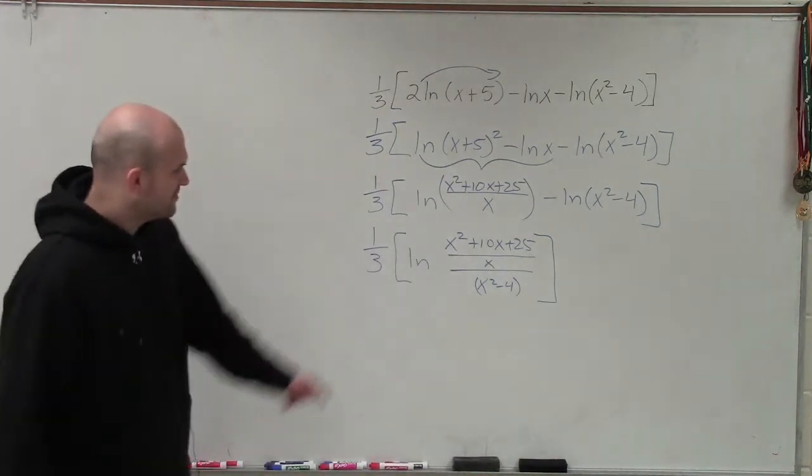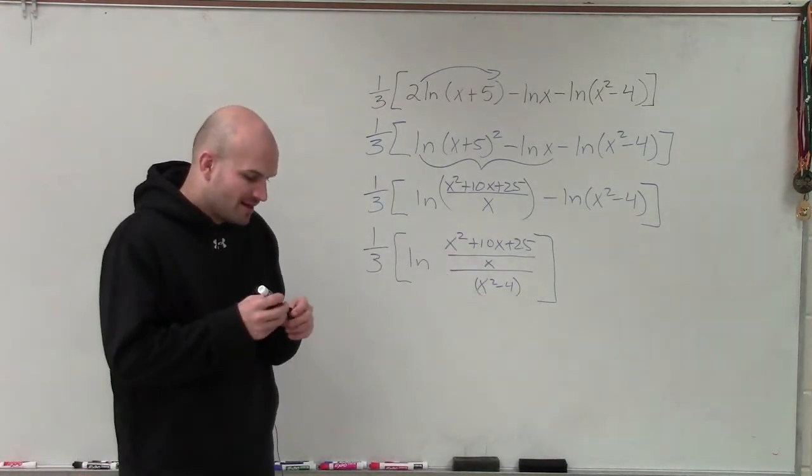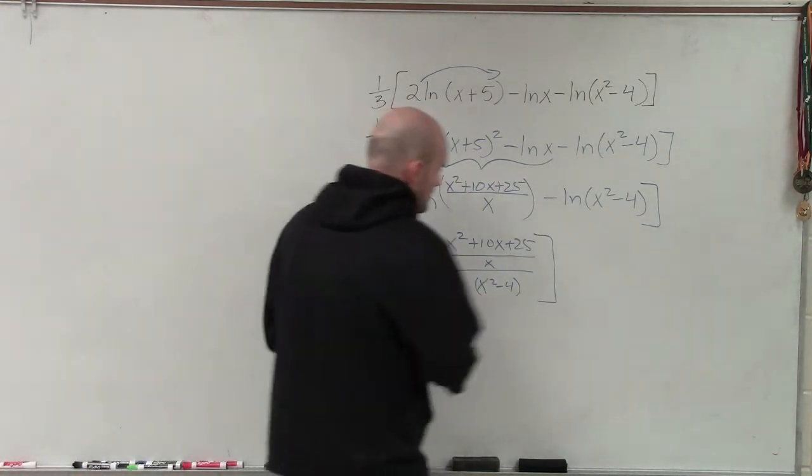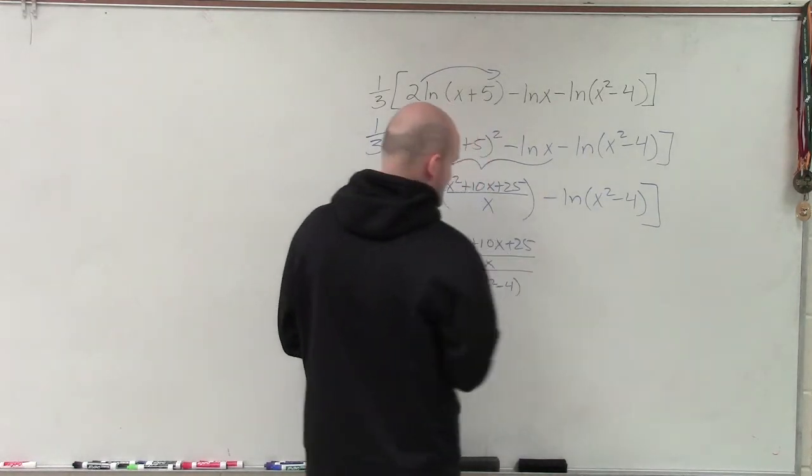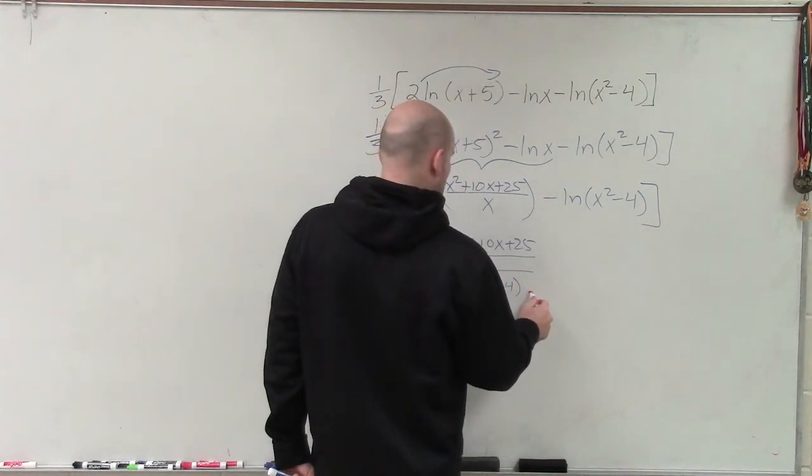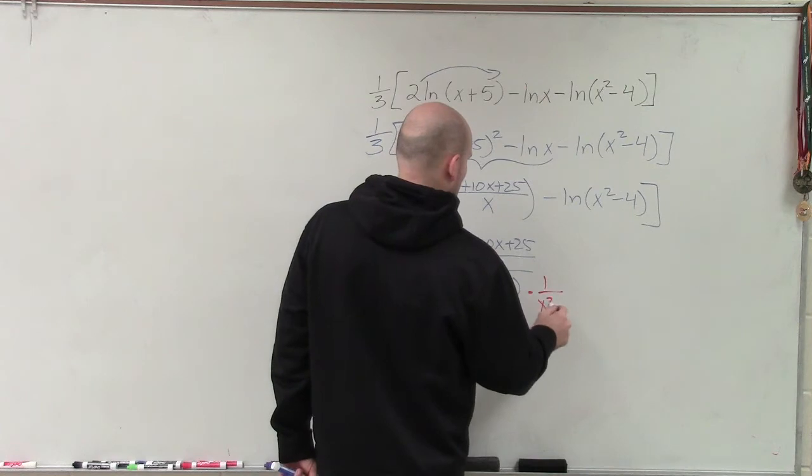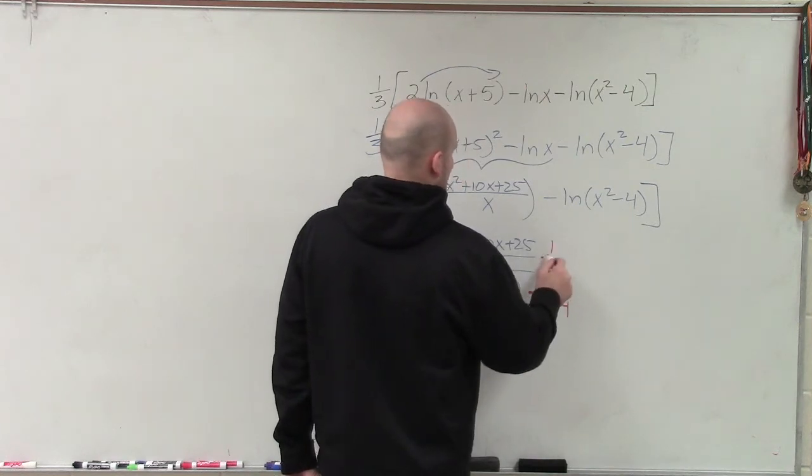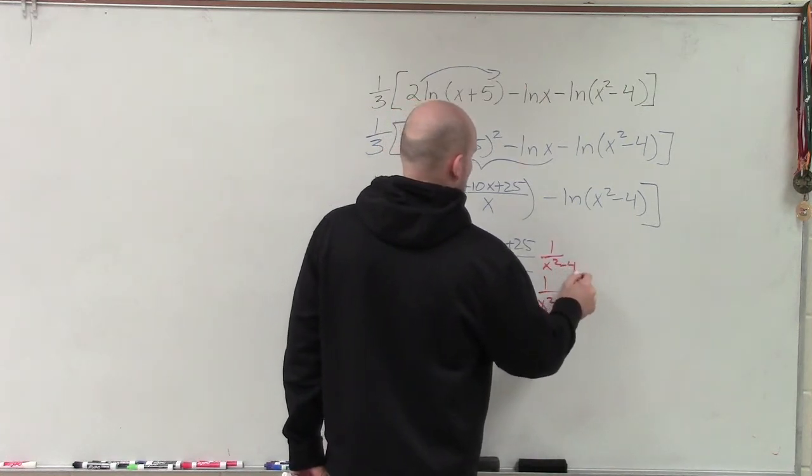But when we're looking at something like this, this is a complex fraction. We're going to want to simplify that. So to do that, what I'm going to do is I'm going to multiply inside this by the reciprocal. So if I multiply by 1 over x squared minus 4, times 1 over x squared minus 4.